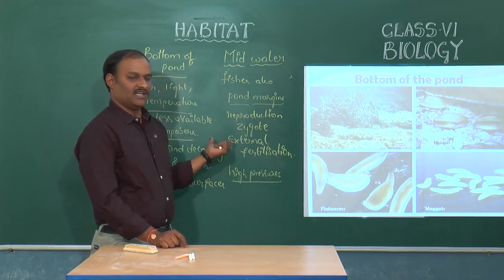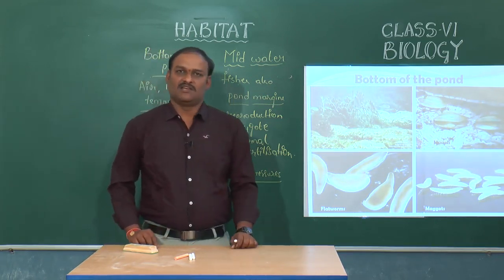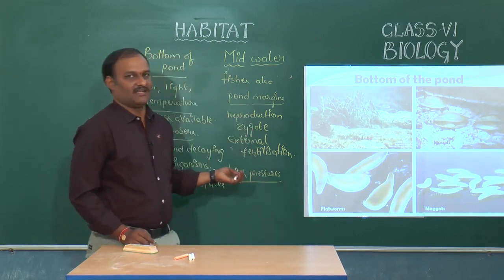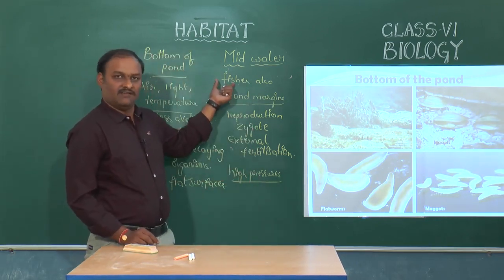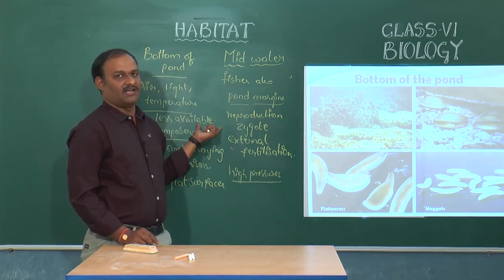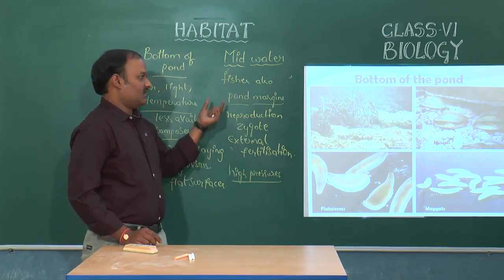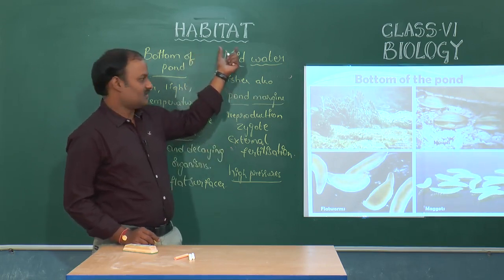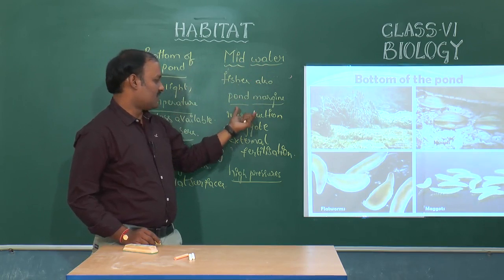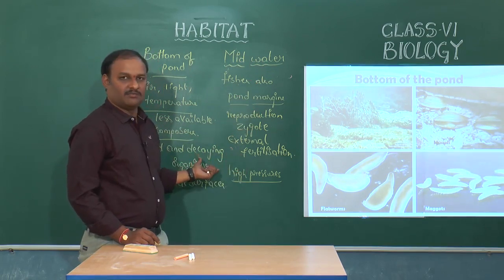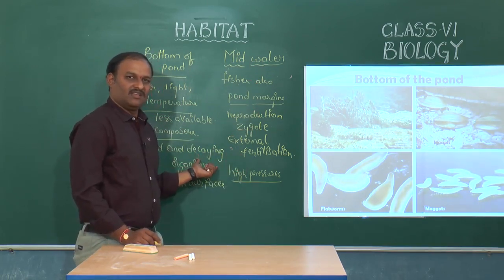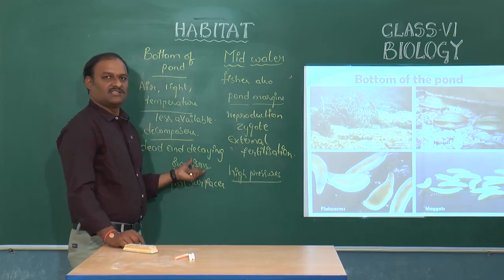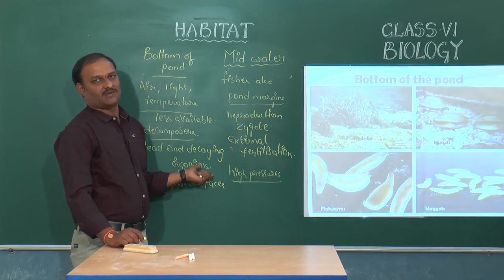We have seen different types of organisms living inside the pond across their different habitats. Even though a pond is a single habitat, every region — the surface, mid-water, margins, and bottom — hosts completely different organisms based on the necessary conditions available for their survival.